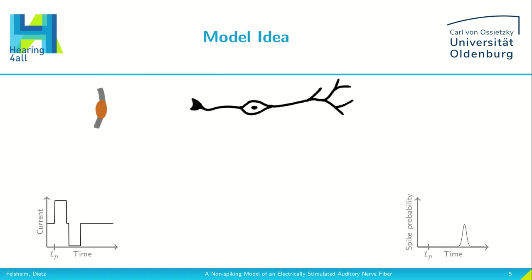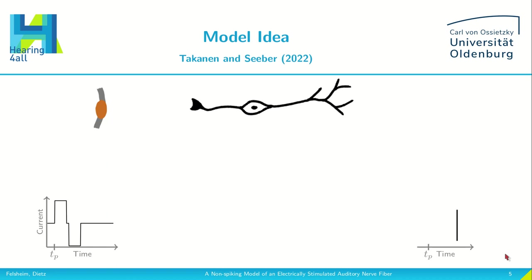The idea behind the model is that when we stimulate a nerve fibre with an electrode, for example by emitting a biphasic pulse, the output of our model fibre should be the spike probability over time. But let's first have a look at how the model published by Tarkan and Zeber works.